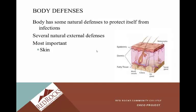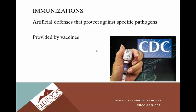The body has natural defenses to protect itself from infections, the most important of which is our skin. The skin protects us, so it's very important that we keep intact skin, because once there's a break in the skin there's now a portal of entry for microbes. Immunizations are artificial defenses that protect against specific pathogens, provided by vaccines. Many of the vaccinations required for this class — hepatitis B, for example — will protect you against specific pathogens.